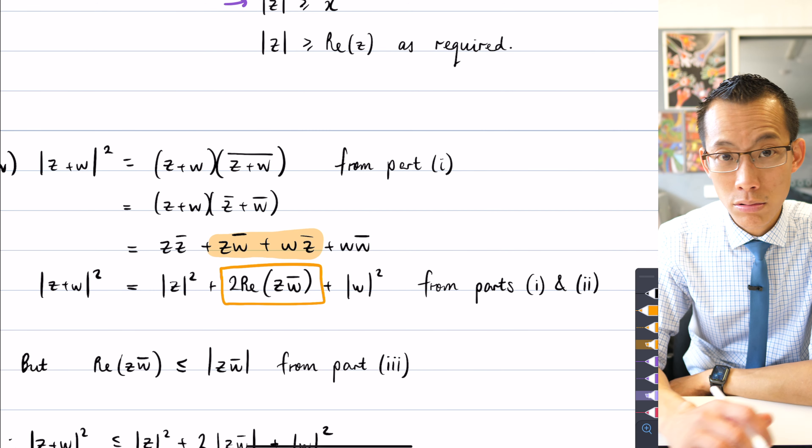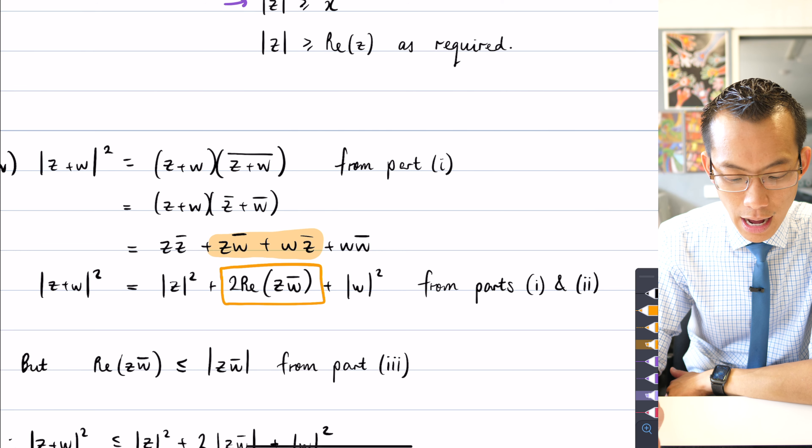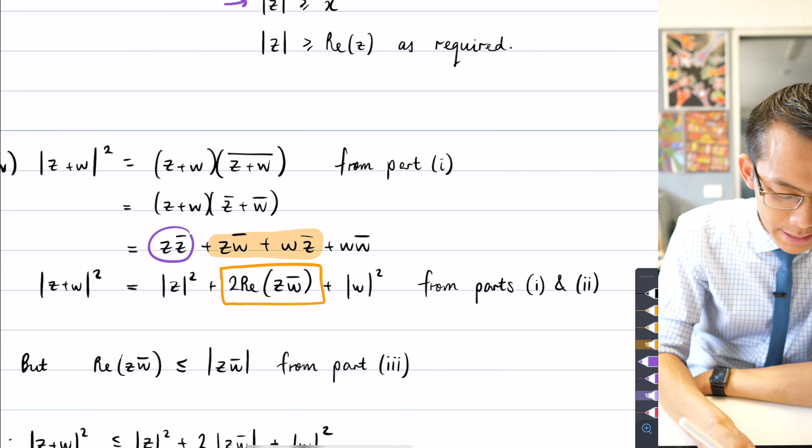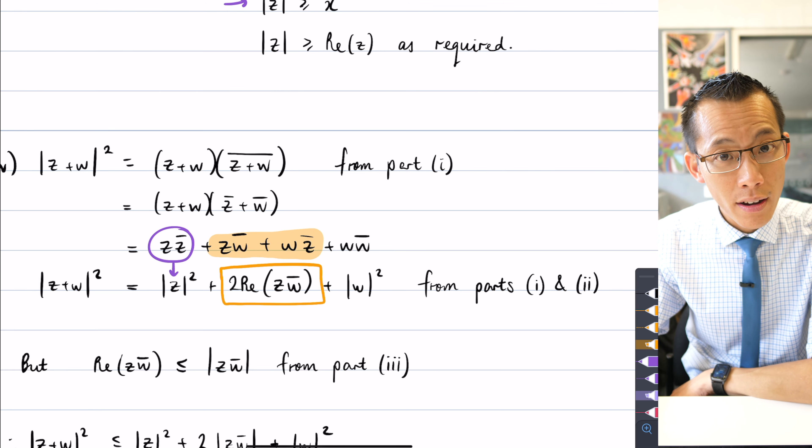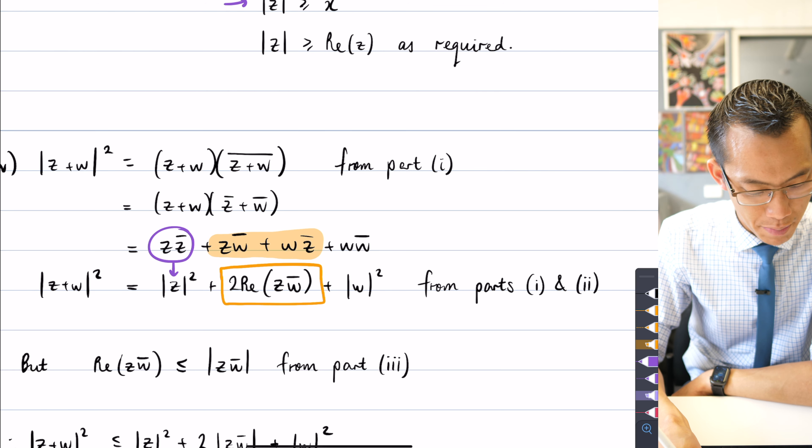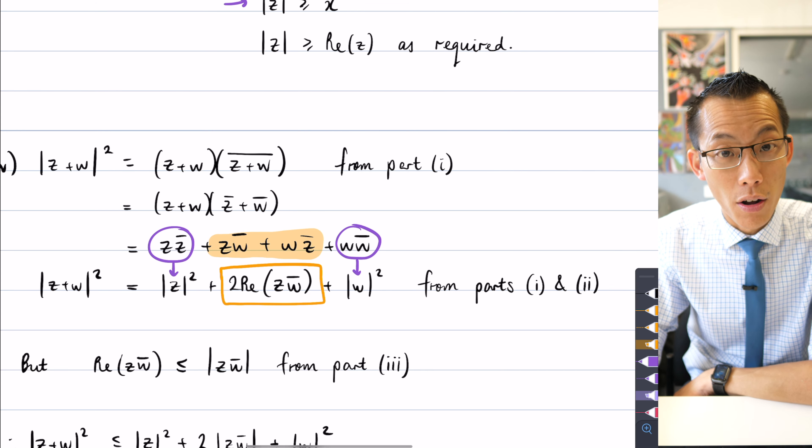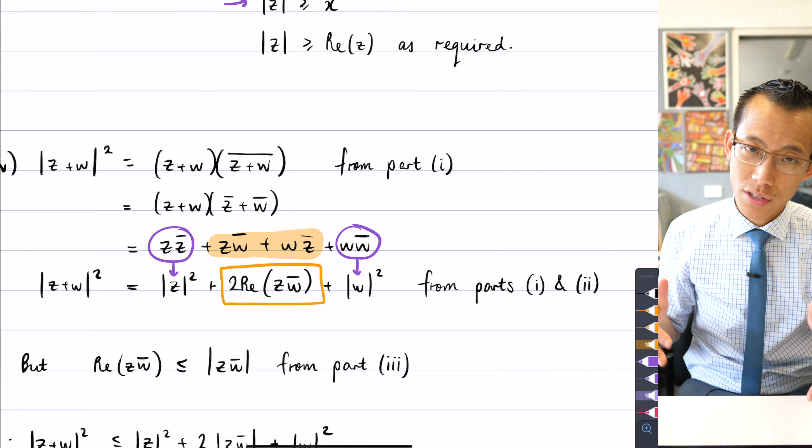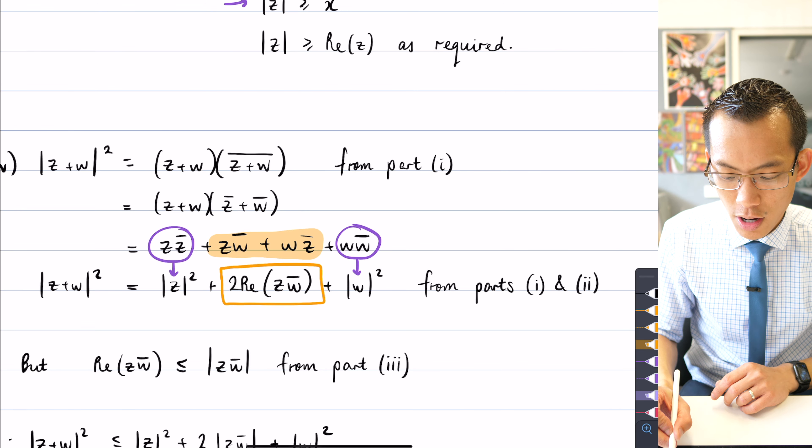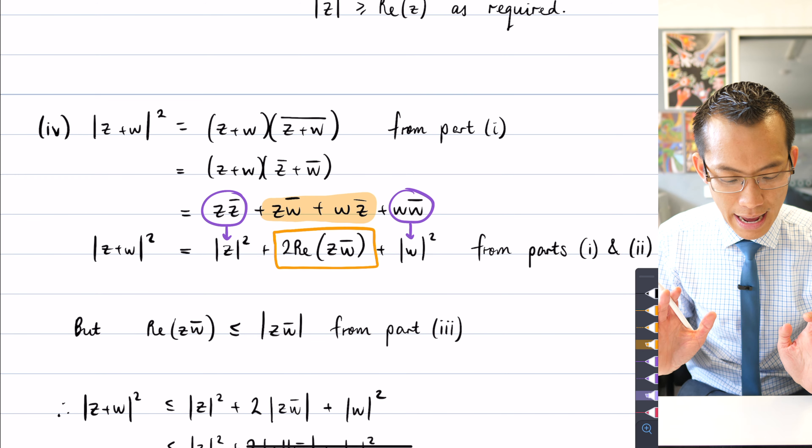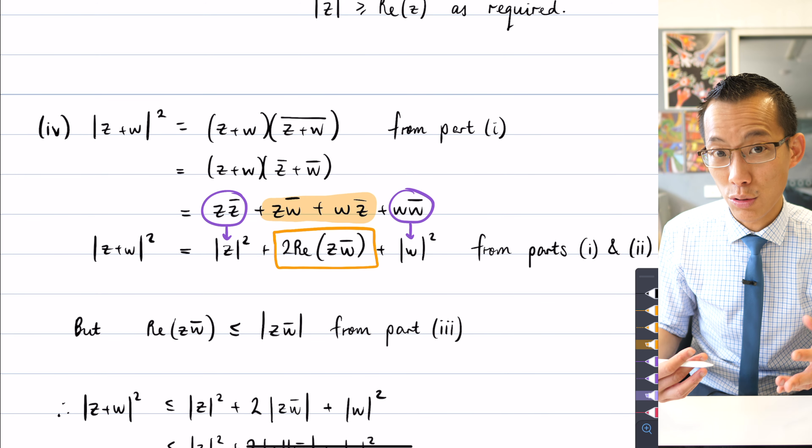So I can just say that's equal, just do a substitution. And similarly, in part one, we saw ZZ bar, that was the square of mod Z. And by exactly the same logic, WW bar is the square of mod W. So I've done a bunch of substitutions here off the basis of part one and part two. So this is good, but how do I work from this to my actual triangle inequality?